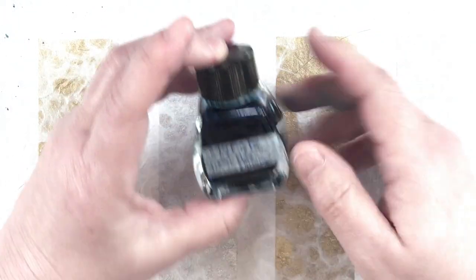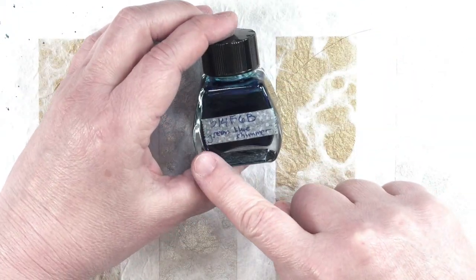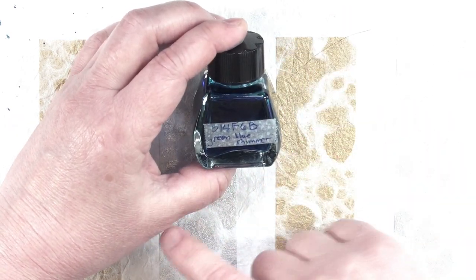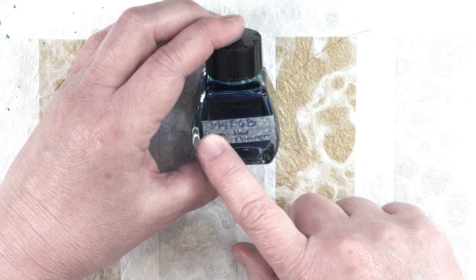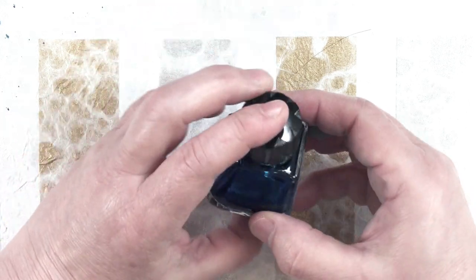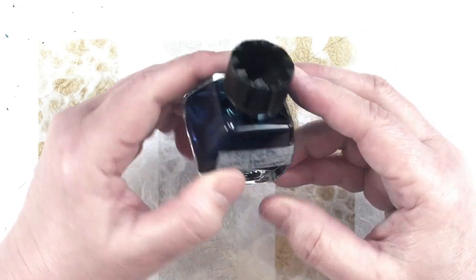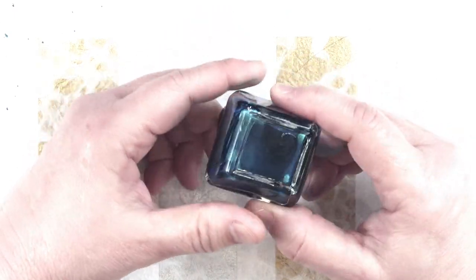Next up is my custom color. I used the hex code 014F6B, which is a kind of bright blue with a little bit of green in it and a blue-green shimmer. And as you can see, I needed to put the name on the back with washi tape.